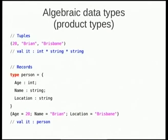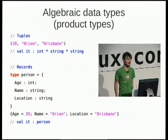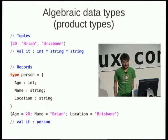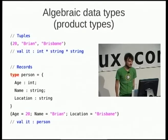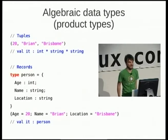Algebraic data types. Most of this talk is about the functional parts of F-sharp. Tuples have their length and the type of every element encoded in the type itself, so an int-by-string-by-string is different from an int-by-int-by-int. A record is just a named tuple. In the tuple I've got 20, Brian, Brisbane — but if you want to make it explicit, you can make a record and say the age is 20, the name is Brian, and the location is Brisbane.